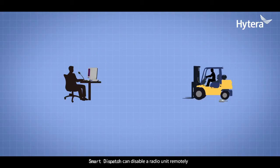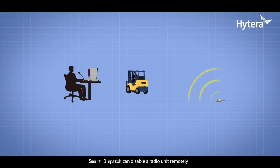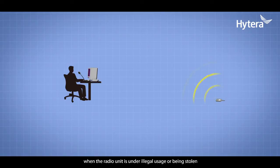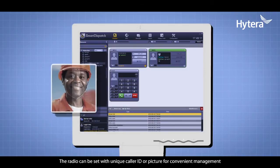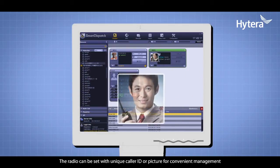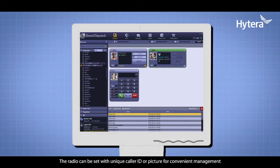Smart Dispatch can disable a radio unit remotely when the radio unit is under illegal usage or being stolen. The radio can be set with unique caller ID or picture for convenient management.